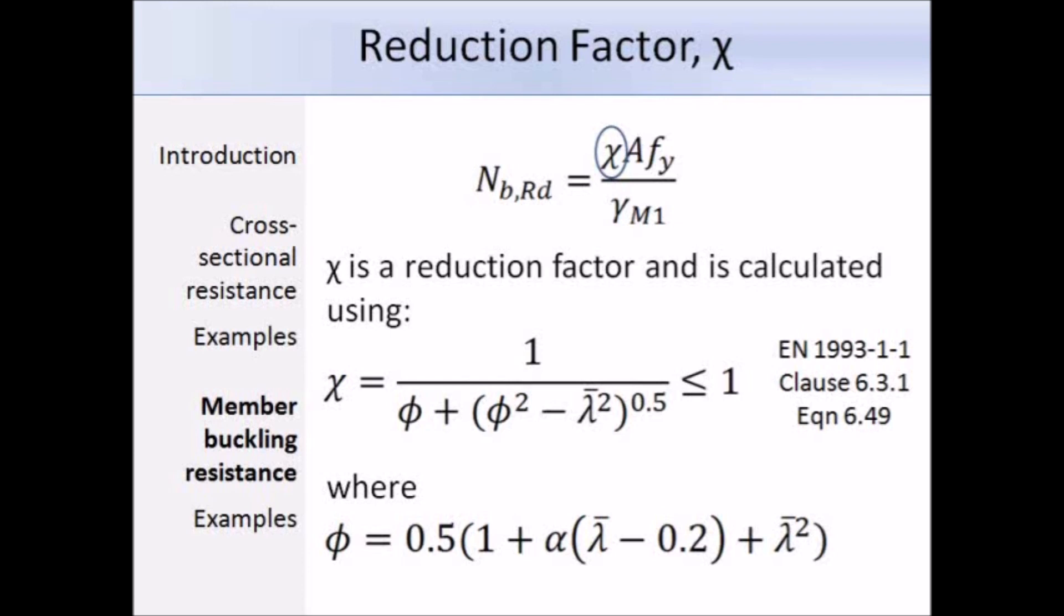So there are two new terms introduced: phi and lambda bar. Equation 6.49 also gives the expression for phi, which equals 0.5 times 1 plus alpha times lambda bar minus 0.2 plus lambda bar squared. So again we have a new term, and that's alpha, so this might be a little bit confusing.